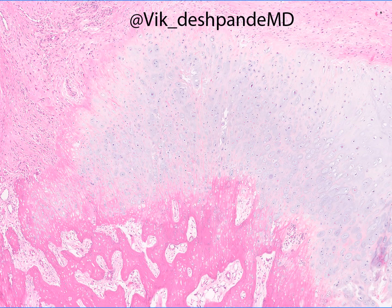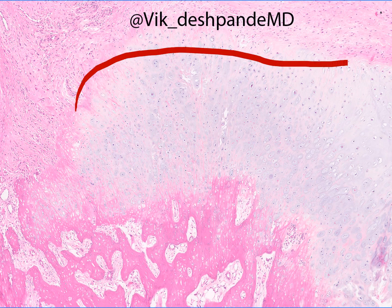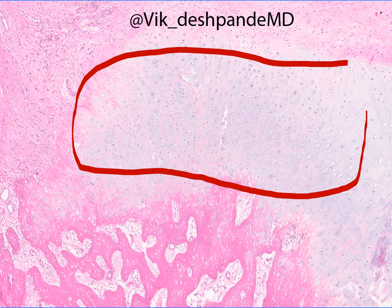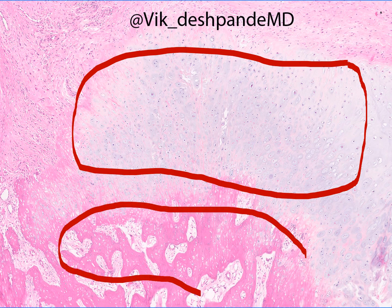Here's a high-power view of that cellular cartilaginous cap. This is indeed quite cellular, and you can see again why you might call this a chondrosarcoma. Beneath that cartilage, as seen on the previous slide, there are thick seams of bone and relatively hypocellular material between those seams.